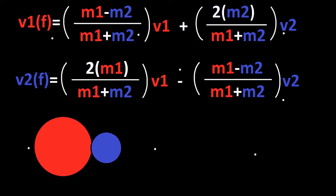And for finding the velocity final of the blue ball, we're going to use 2m1 over m1 plus m2 times v1 minus m1 minus m2 over m1 plus m2 times v2.